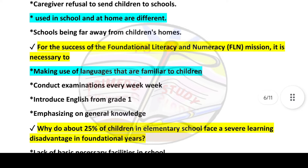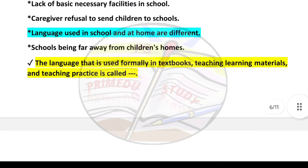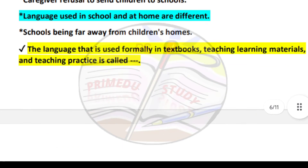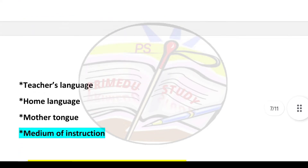Next question: For the success of Foundational Literacy and Numeracy (FLN) mission, it is necessary to — answer is option number one: make use of languages that are familiar to children. Next question: The language that is used formally in textbooks, teaching-learning materials, and teaching practice is called — answer is option number four: medium of instruction.